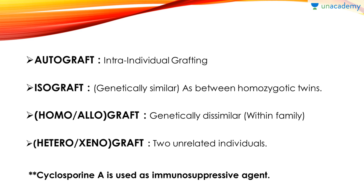Isograft is grafting within genetically similar individuals — as between homozygotic twins. That is very, very important. You cannot have heterozygotic twins undergo isograft because they are not perfectly genetically similar. When one zygote divides into two, that is different from when two separate eggs form two separate zygotes making twins. In case of homozygotic twins only, you can have an isograft, and the success rate is very high because they have genetic similarity and obviously HLA will be matching since they originate from the same zygote.